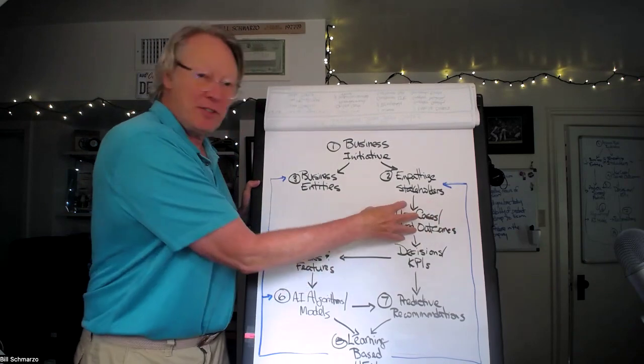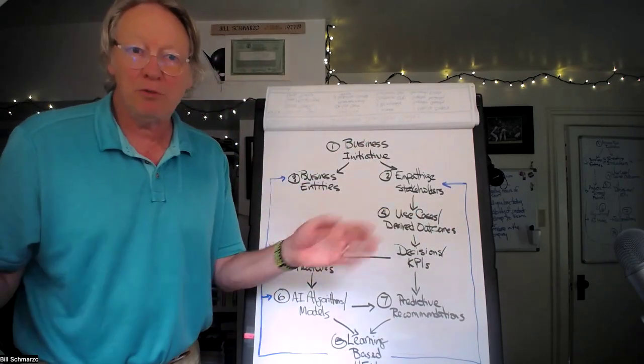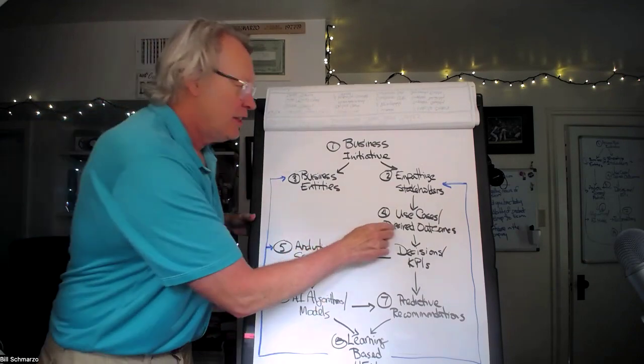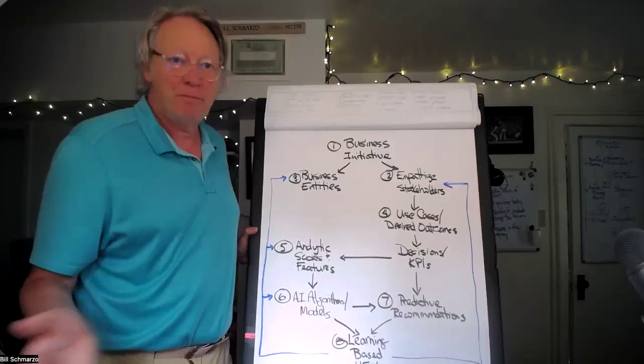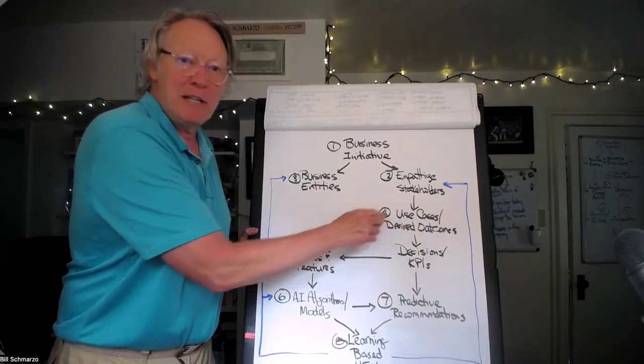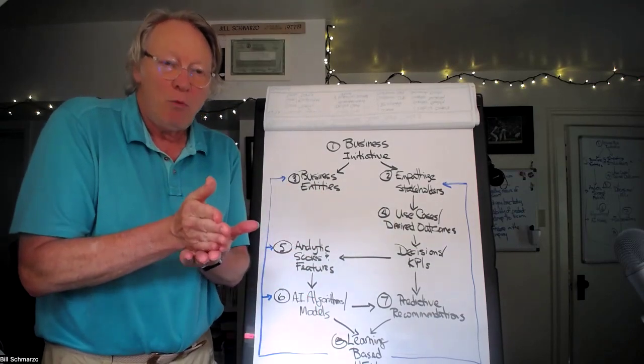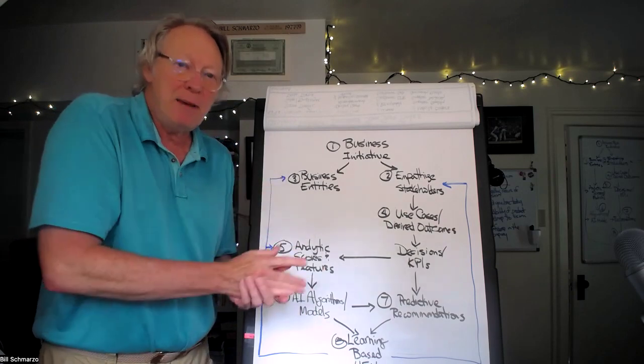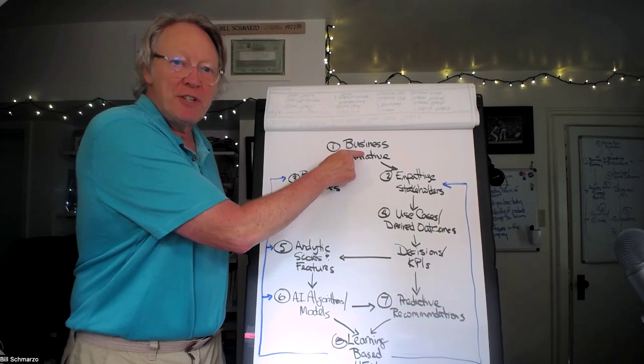What happens out of this process is for that business initiative, you probably have identified somewhere between 10, 12, 14 use cases necessary to support this business initiative. You can't do all 14, all 18 or all 12. What we're going to do is we're going to prioritize based on value and feasibility to put together a roadmap of use cases.